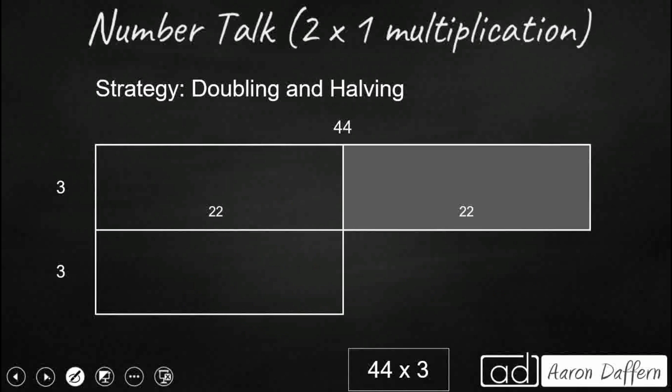Another method we could use is doubling and halving. Doubling and halving is pretty cool because it lets you double one factor and then halve the other factor and you still get the same product. Take a look at what we did. We took our 44 and cut it in half. You see this gray area? That means we're getting rid of this, cutting it in half. Now, in order to keep our expression balanced, we need to double our 3. So you notice how we doubled our 3, now we've got a 6.